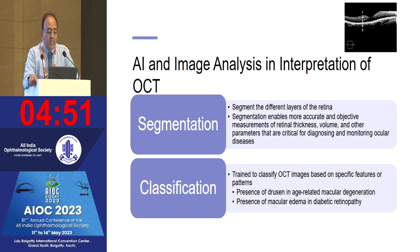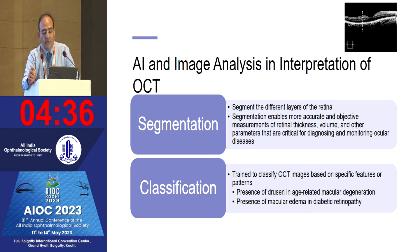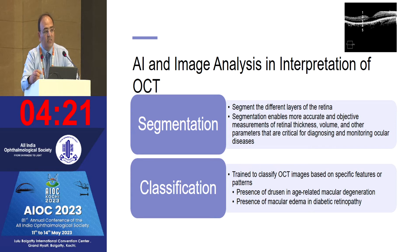AI-based image analysis is also of great value in OCT. It segments the different layers of the retina, enabling more accurate and objective measurements of retinal thickness, volume, and other parameters critical for diagnosing and monitoring ocular disease. It can classify OCT images based on specific feature patterns such as the presence of drusen in age-related macular degeneration or macular edema.